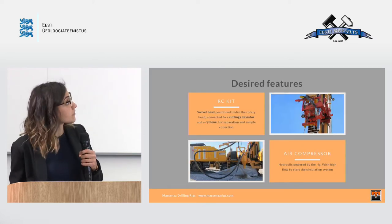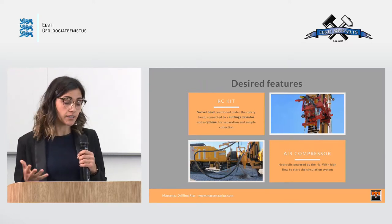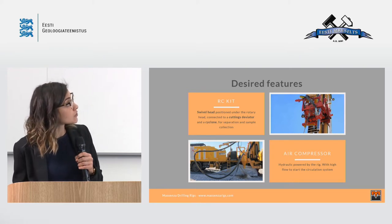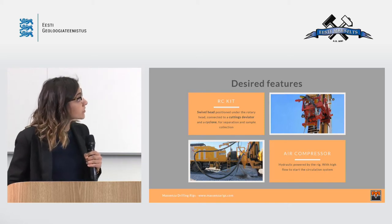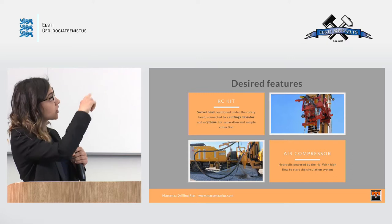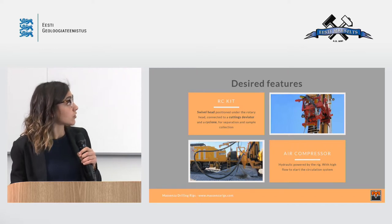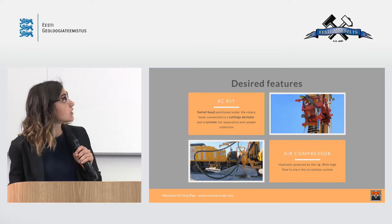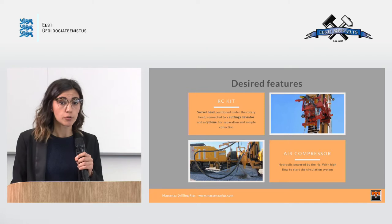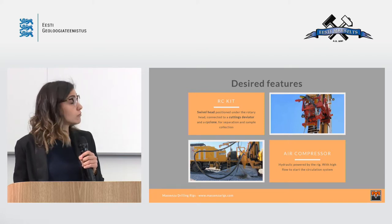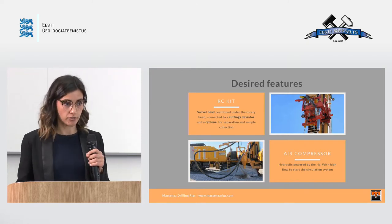With regards to the drilling rig, what you need on board for this system is what we call our RC kit. You need this swivel head mounted under the rotary head, connected to a cutting deviator and to this discharge hole, which leads the air and cuttings to the cyclone on the side of the rig for separation and sample collection. Then, of course, you need the air compressor, which normally must have high flow — about 1,000 CFM — to drive the actual circulation system.